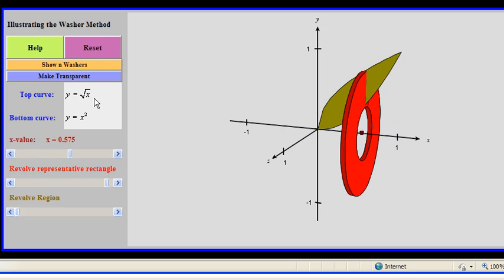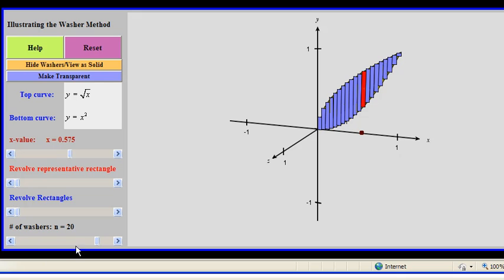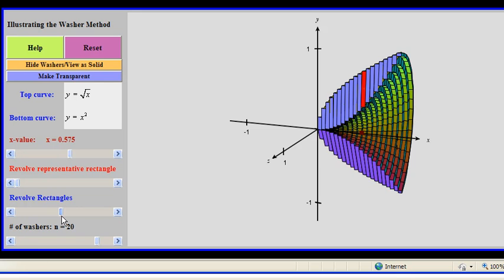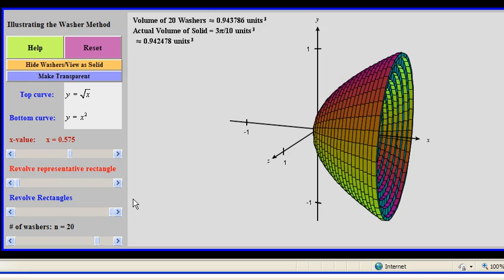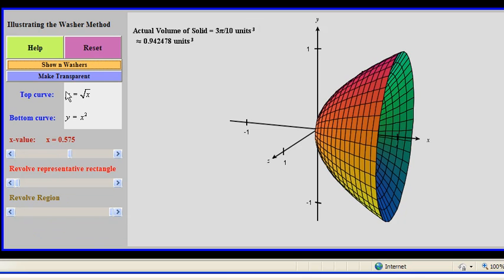And if we get a whole bunch of those little slices and we rotate them all, then we're going to get our actual shape, or at least a good approximation of it. In the long run, we're going to get the actual shape, which we see there.